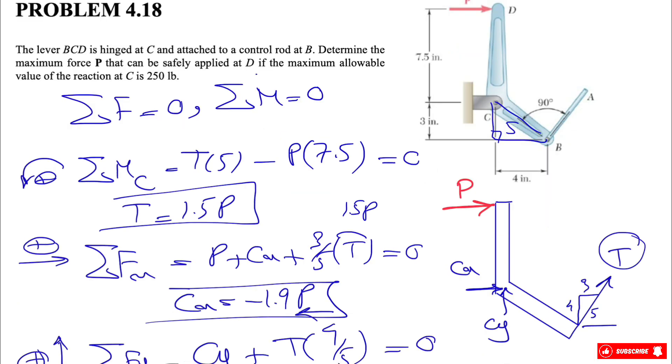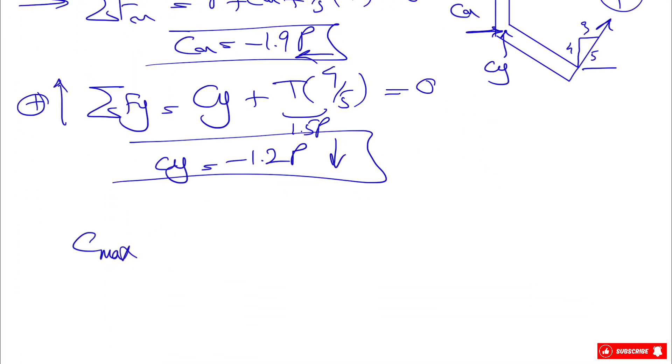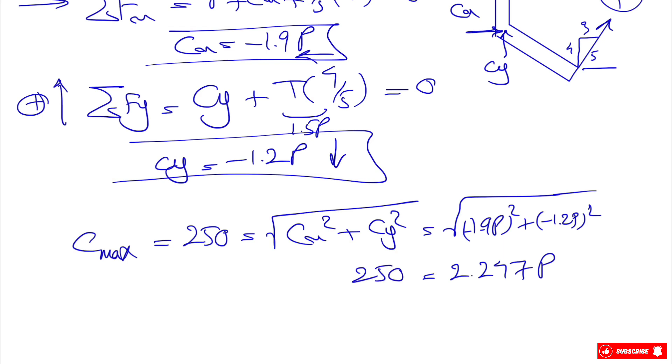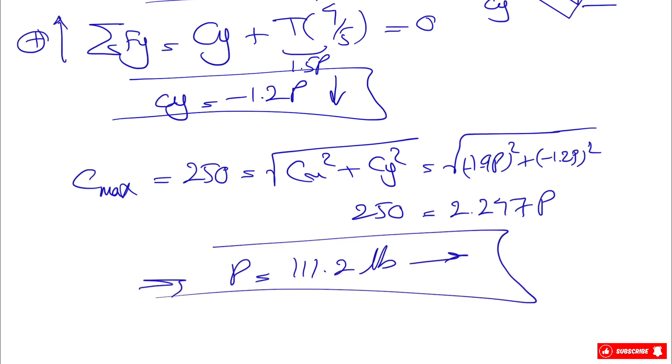This means the C max, or the maximum for the magnitude, will be 250. We know how we can find the magnitude: square root of Cx squared plus Cy squared. If we do that, we'll get 1.9P squared—the negative sign doesn't make any difference—and same for here, minus 1.2P squared. This would give us 2.247P, and we know this equals 250. From here, we can find our P, which is 111.2 pounds.